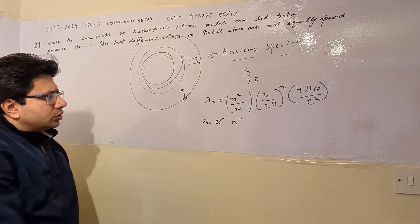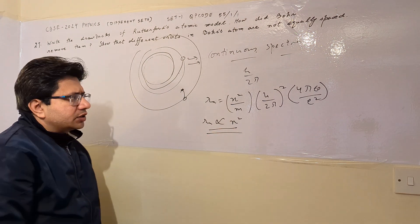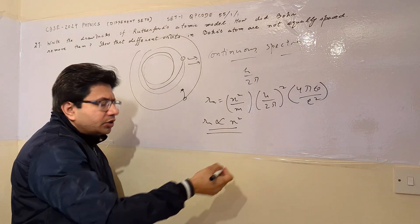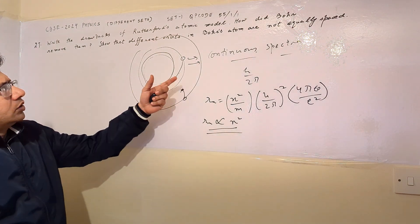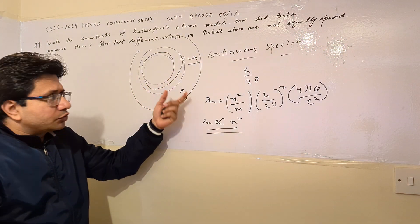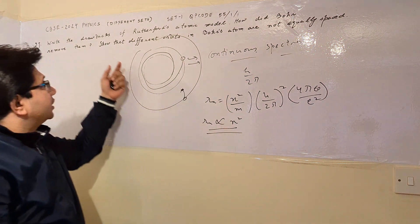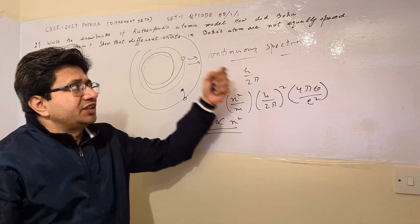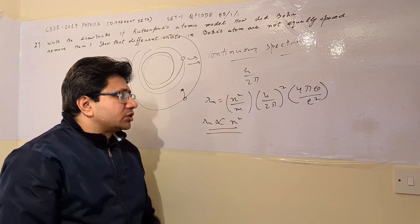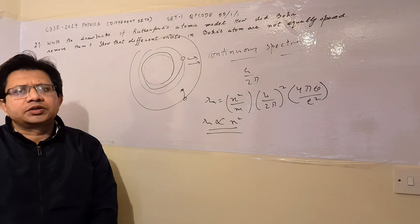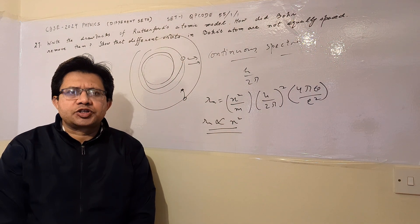Therefore, the radius of the nth orbit is directly proportional to n². This is not a linear relationship — it is a quadratic or square relationship. This means the radius is not equally spaced for consecutive orbits. Hence, different orbits in Bohr's atom are not equally spaced. Hope you understand the explanation.